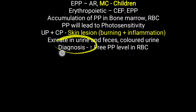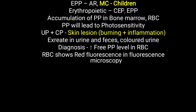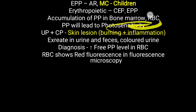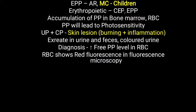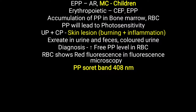The diagnostic method for erythropoietic porphyria is an increase in free protoporphyrin level in the RBCs, which is typically helpful for diagnosis. RBCs show red fluorescence under fluorescence microscopy, as protoporphyrin levels are found to be high in RBCs. This red fluorescence can also be helpful for diagnosis. Protoporphyrin has a Soret band of around 408 nanometers, which is also used for diagnostic purposes.